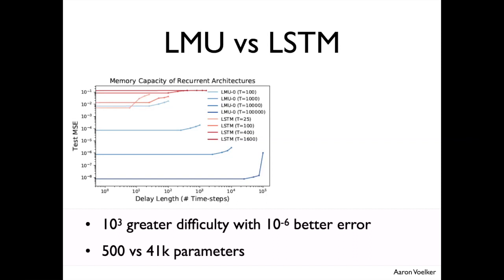Machine learning people care about performance on real tasks, not just the delay task. On psMNIST — a standard benchmark where MNIST digits are shown one pixel at a time in randomized order — out of all the RNNs proposed recently, the LMU does better by a reasonably significant margin. A couple of percent makes a big difference for MNIST, and we've actually gotten even better numbers than what was in the paper published last December. We've also looked at its application to natural language processing and cybersecurity — analyzing whether a network packet is dangerous or not.